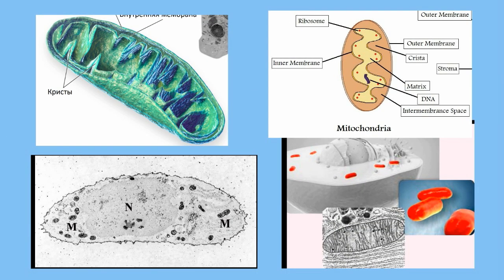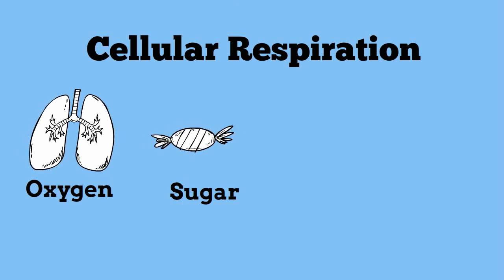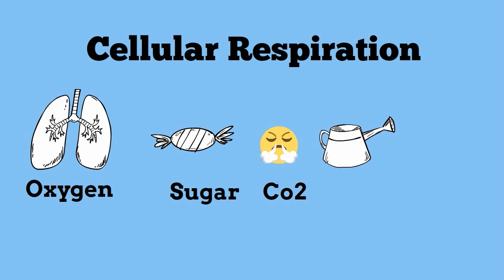Mitochondria produce energy in a process called cellular respiration. It takes oxygen and sugar and makes carbon dioxide, water, and ATP.